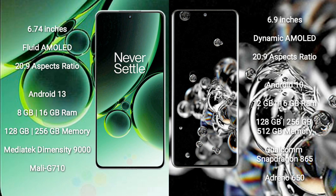OnePlus Nord 3 comes with 8GB or 16GB RAM and 128GB to 256GB internal storage, powered by the MediaTek Dimensity 9000 processor and Mali-G710 GPU.